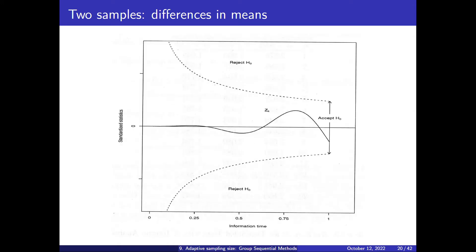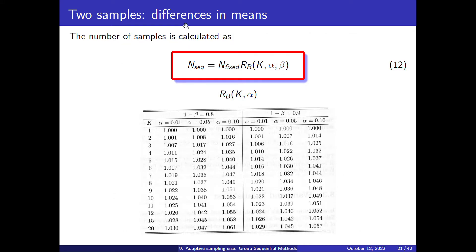Here we can see how it works. At the beginning, the threshold used to reject the null hypothesis is larger than the one used at the end. Over time, we see that we can stop the test much earlier if there is a lot of evidence, so the threshold here is much larger at the start.